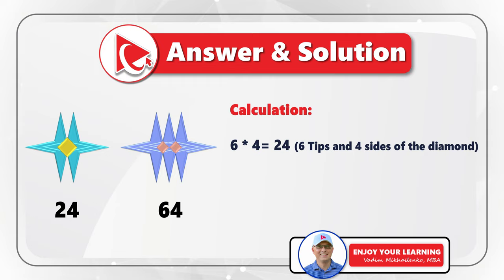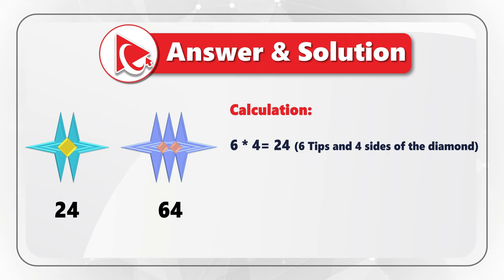Can you do the calculations for the second set? Let's count the tips. We have eight tips on the purple stars — one, two, three, four, five, six, seven, and eight. And we have eight sides of the diamonds because there are two diamonds there. Eight multiplied by eight equals 64. That's how the number was calculated.